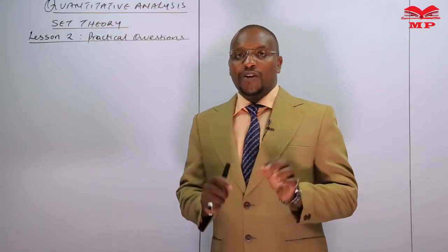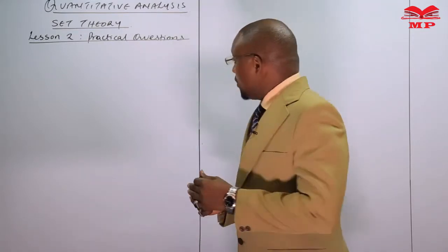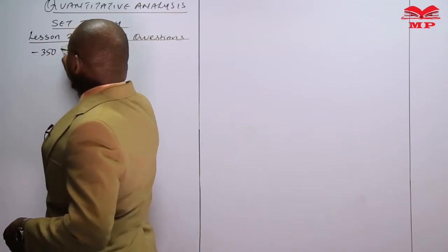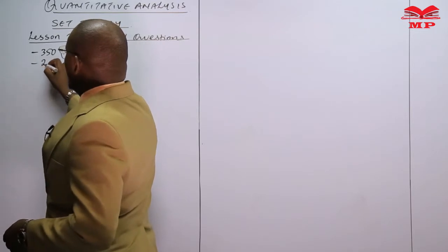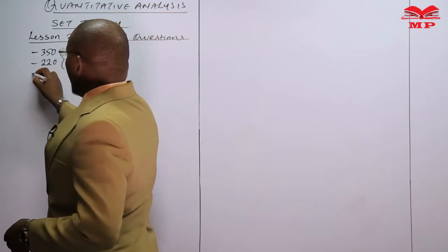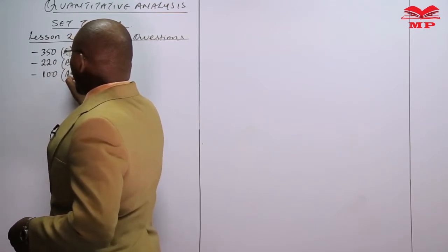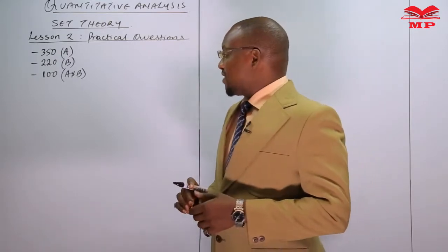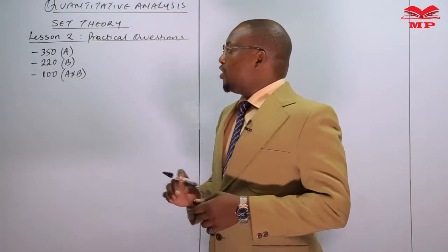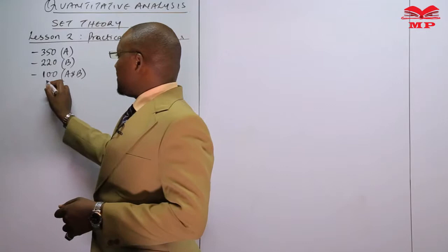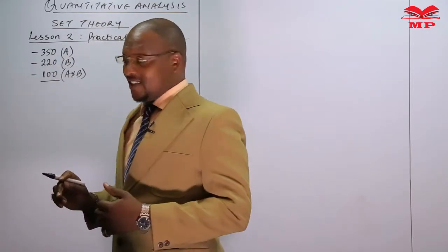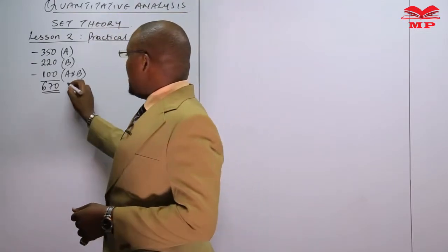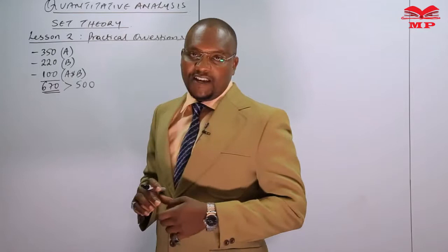This question features only two individual sets: the universal set of 500 consumers, and the individual sets — product A and product B. We are told 350 liked product A, 220 liked product B, and 100 liked both. If you add these numbers, you get 670, which is way beyond the 500 universally given.